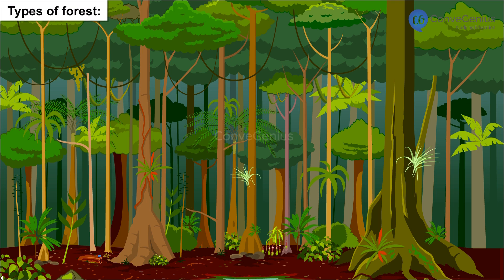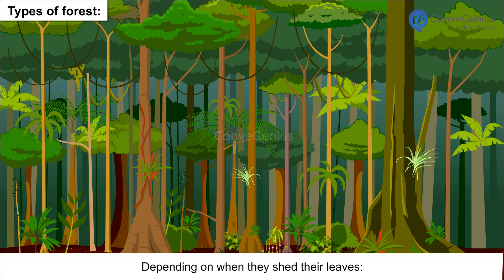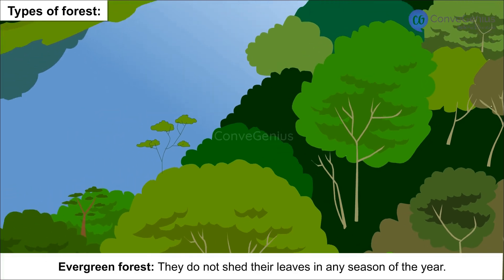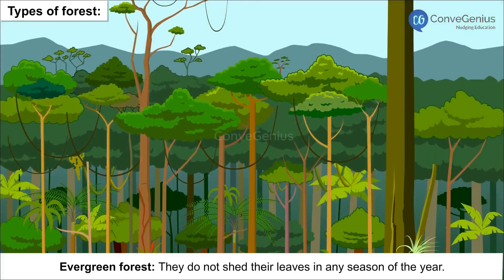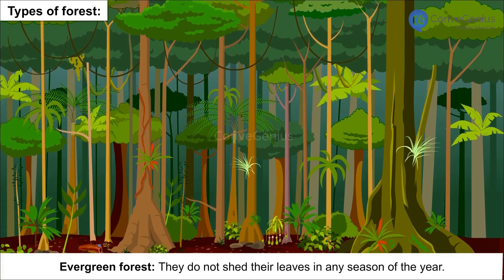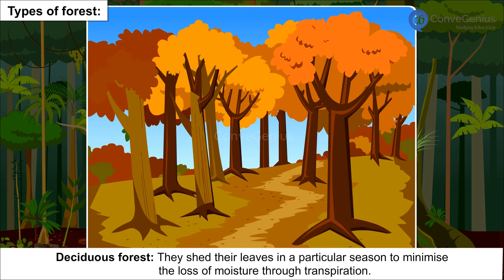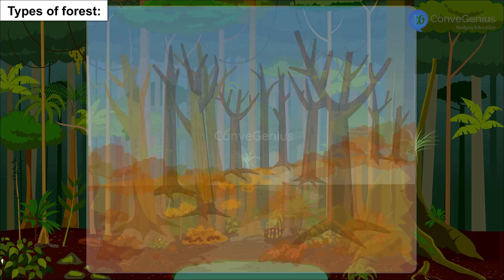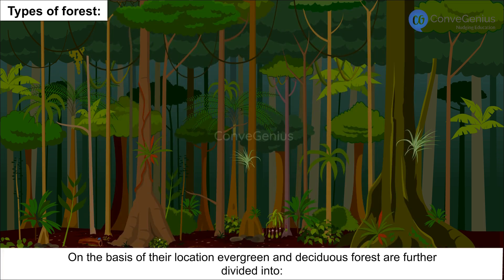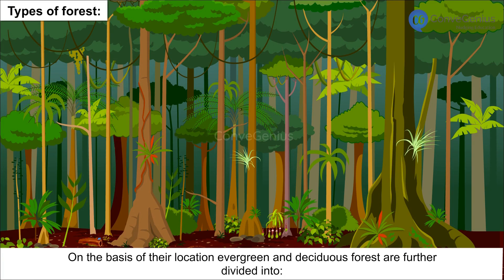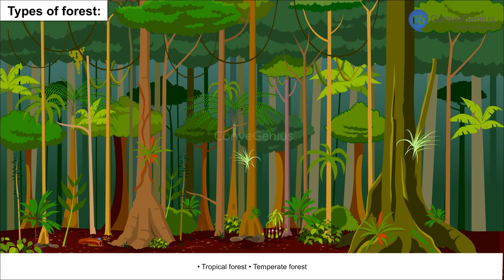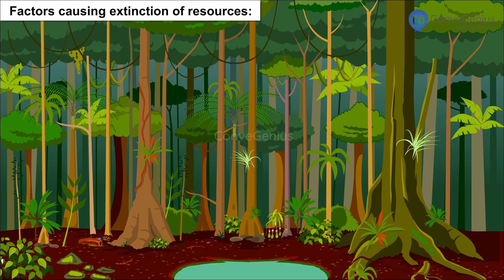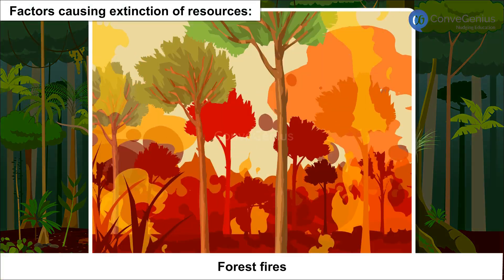Types of Forest: Depending on when they shed their leaves, forests are classified as Evergreen Forests, which do not shed their leaves in any season, and Deciduous Forests, which shed their leaves in a particular season to minimize loss of moisture through transpiration. On the basis of their location, evergreen and deciduous forests are further divided into Tropical Forest and Temperate Forest.